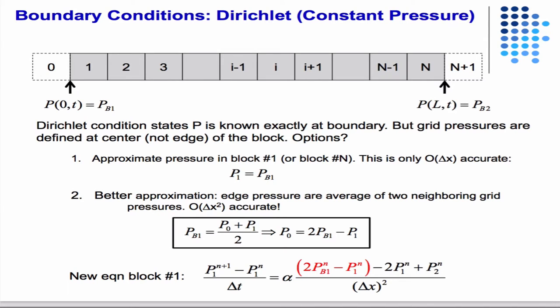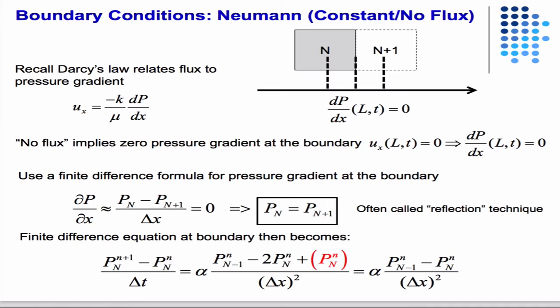The modification to the first equation when you have constant pressure boundary condition looks like that. No flow on the right looks like that. This is also known as the reflection technique, because you're just reflecting the pressure from the Nth to the Nth plus one block.